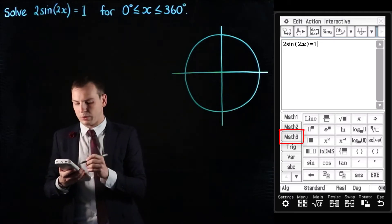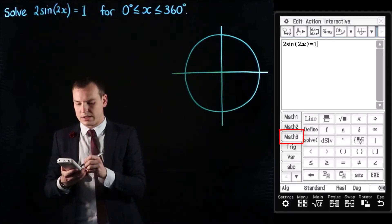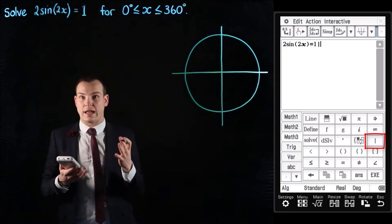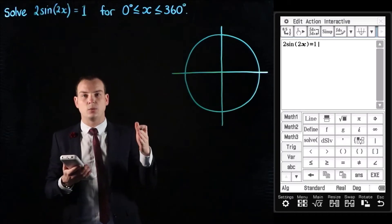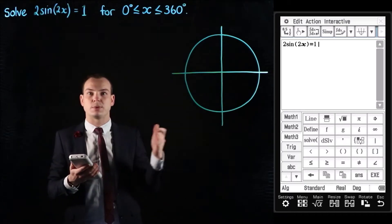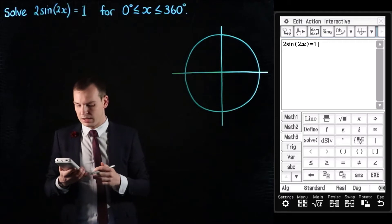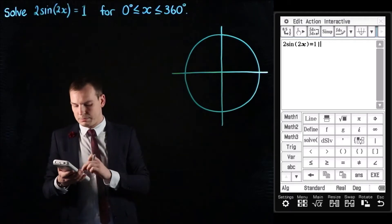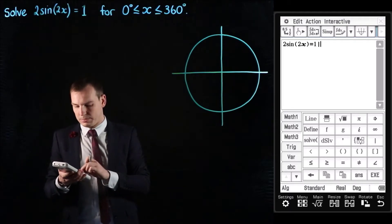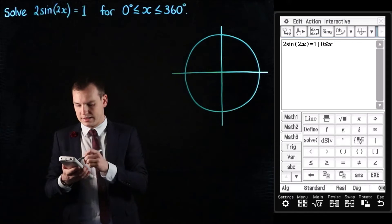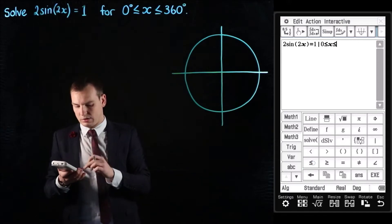So we're going to go into math 3 and we're going to find the straight up and down line — the given that line — so it's going to be given that x is between 0 and 360. Still in math 3, we're going to type in 0 is less than or equal to x is less than or equal to 360.